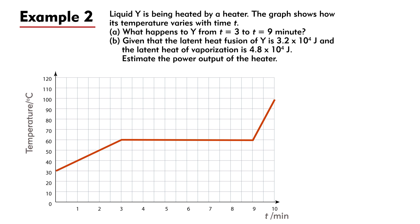(b) Given that the latent heat of fusion of Y is 3.2 × 10⁴ Joules and the latent heat of vaporization is 4.8 × 10⁴ Joules, estimate the power output of the heater.